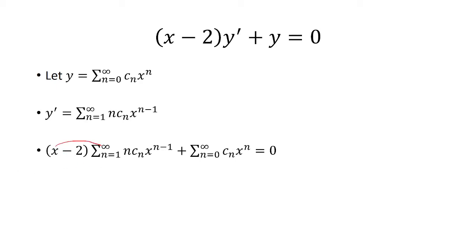And so now we have to multiply or distribute the sum to x and negative 2. So when I multiply by x, I have x times x to the n minus 1, which is just x to the n. Then that's minus 2 times the sum, and then plus the other sum equals 0.